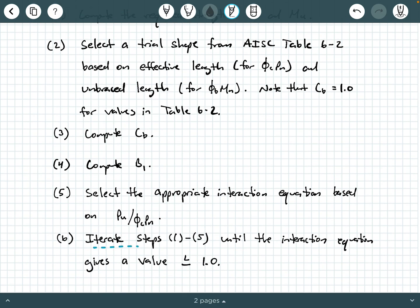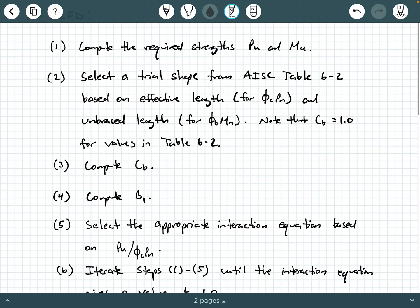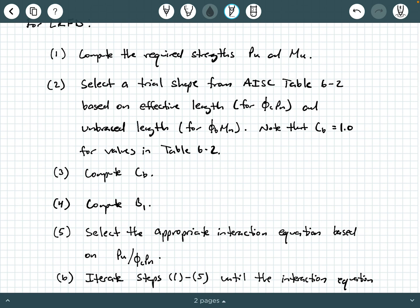And step six is just iterate through steps one through five until our interaction equation gives a value less than or equal to 1.0. So if you notice, a lot of these steps, we've actually done them before when we were checking beam columns that were a part of a braced frame. The only difference now is that at one of the early stages, you are going to select a trial shape, a trial section from table 6.2 of the steel manual to kind of get the ball rolling through your process. But after that, the subsequent calculations are pretty much the same as what you did when you were given a section to begin with and you were told to investigate its adequacy.